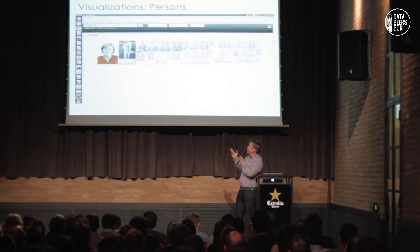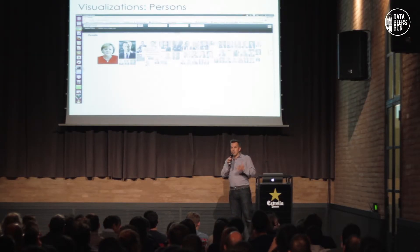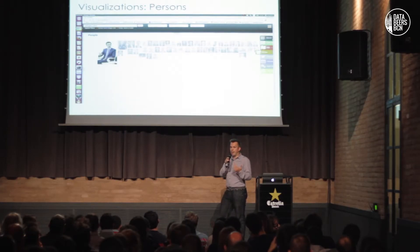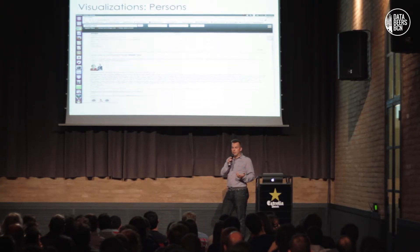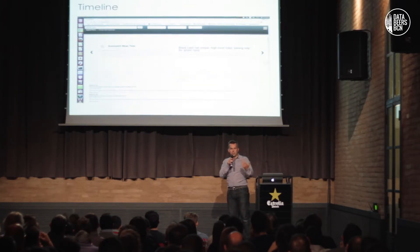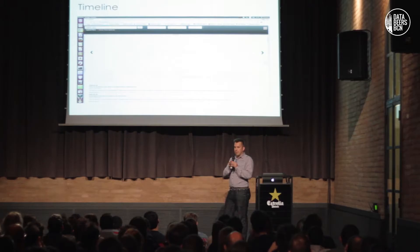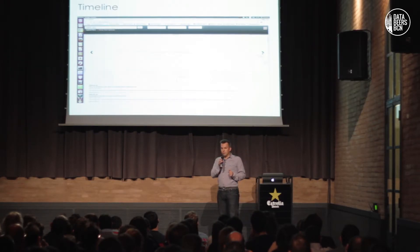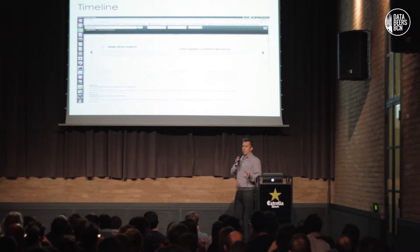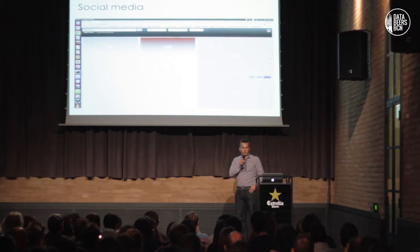We have the same thing for persons, so you can see what are the people that really appear in the context of the topic you're researching. Who are the main actors? Who are the people you should be interested in? It gets their photos from Wikipedia pages and gives you really nice access to get more background information on them, and use them as a filter. Then we have timelines, which give an overview of the temporal evolution — so you can see all the content that relates to your topic along a timeline, see when things happened, how things evolved, and get background information from Wikipedia related to what you're dealing with.